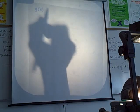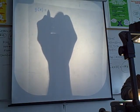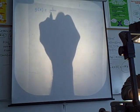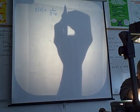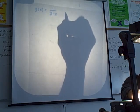g of x equals 1 over 3 minus x, and you're supposed to find the slope at the point (2, 1).